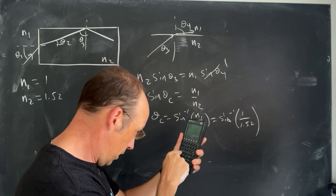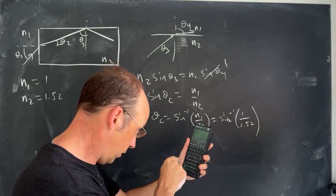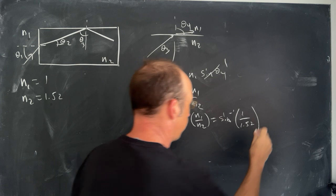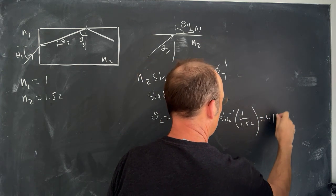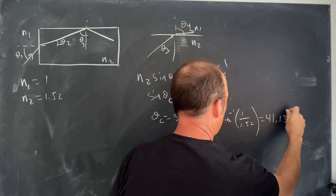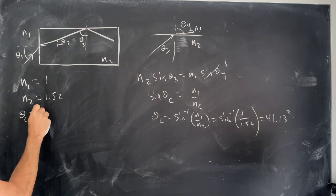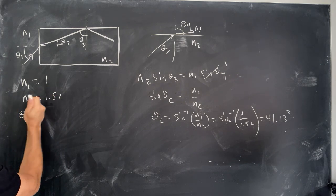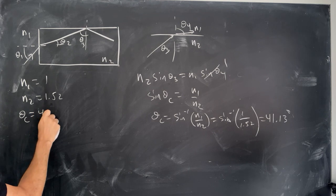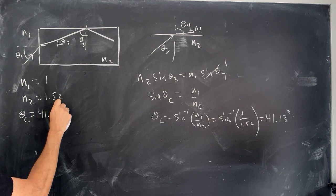41.13 degrees. I have my calculator in degrees. So I'm going to put that over here. Theta C is 41.13 degrees.